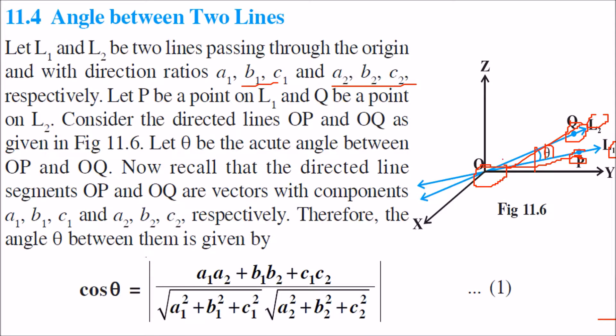So we know that cos theta between them is a1a2 plus b1b2 plus c1c2 divided by under root a1 square plus b1 square plus c1 square times under root a2 square plus b2 square plus c2 square.